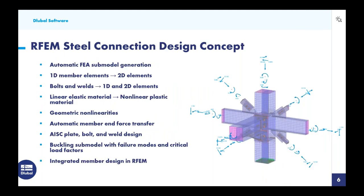Moving on to the RFEM steel connection design concept — a little unique compared to other programs. We generate the entire steel structure in RFEM with one-dimensional members such as beams, columns, and braces, which are automatically converted into an FEA sub-model of 2D surface elements. Bolt elements are converted to 1D beam members, and forces from these bolt members are transferred back to the plate elements using what we call spoke members. Welds are also converted to 2D elements for stress design, with 1D rigid links to transfer forces back to the plate elements.